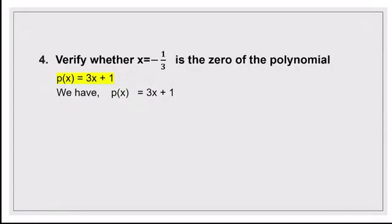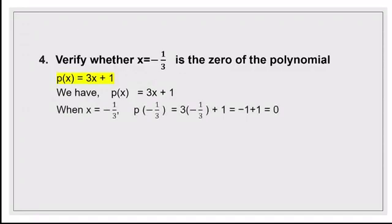The given value is -1/3 and the polynomial is p(x) = 3x + 1. We replace x by -1/3: p(-1/3) = 3 × (-1/3) + 1. The 3 and 3 cancel, giving minus 1, and minus 1 plus 1 equals 0. So we got 0, therefore x = -1/3 is the zero of the polynomial p(x) = 3x + 1. If you don't get 0, your conclusion would be that the given number is not the zero of the polynomial.